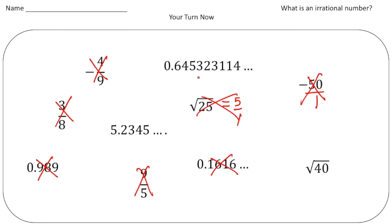So now let's go back up to the top. Here we have 0.645323114 dot dot dot. This decimal has no pattern and notice it goes on forever with the dots. So this is our first example of an irrational number.